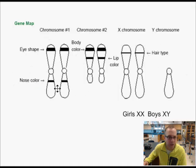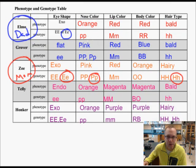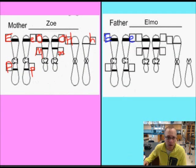The bottom of chromosome number 2, we have nose color. Nose color, the code for Elmo's nose color is little p, little p. So, I'm going to slide a little p in here, a little p in here, and let's move on to chromosome number 2.